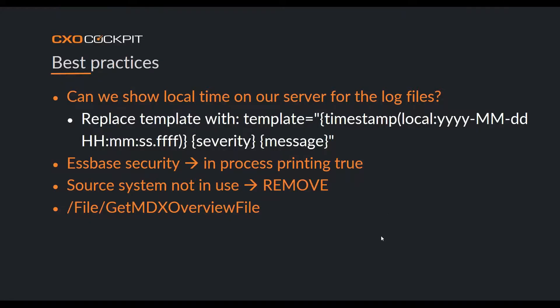We sometimes see customers who have added a new source system in the source system manager just to play around with — it's connected but not doing anything. Please don't do that in your production environment. Use your acceptance, development, UAT, or test environment. If you have a source system with no lists and no reports, please remove it from production.